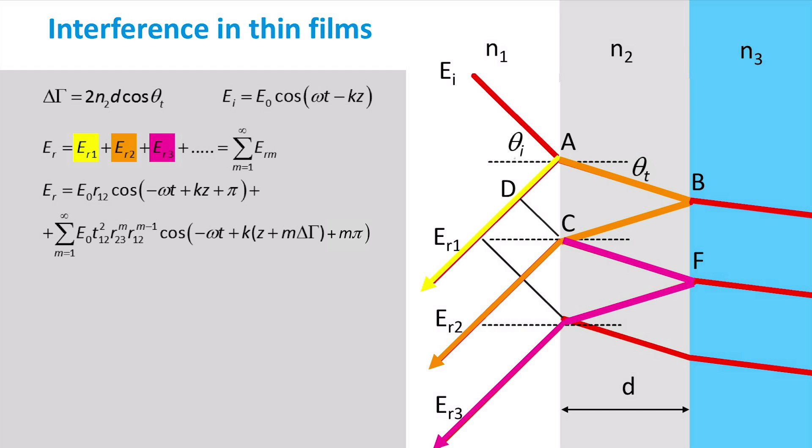The reflected wave can therefore be described by a single wave function consisting of 2 parts. The first part describes the initial reflection event. It is equal to the incident wave EI multiplied by the reflection coefficient of the 1-2 interface.